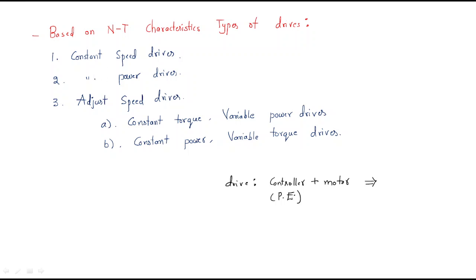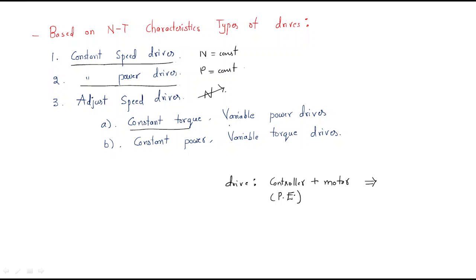The first type is the constant speed drive. The second is the constant power drive, where power is constant. Next is the adjustable speed drive, where speed can be adjusted. Under adjustable speed drives we have two sub-types: constant torque variable power drives, where torque is constant and power is variable, and constant power variable torque drives, where power is constant and torque is variable.